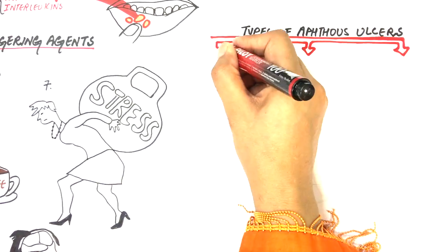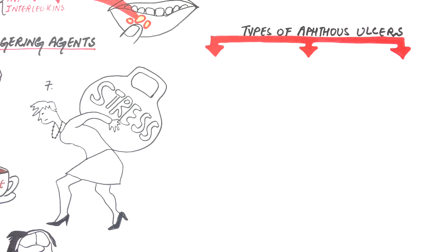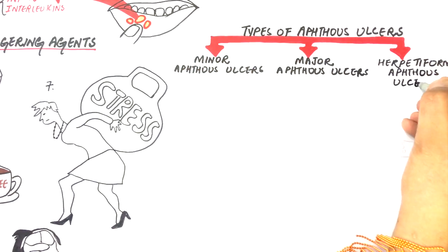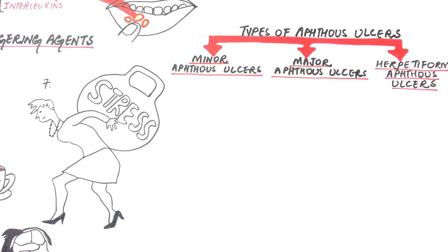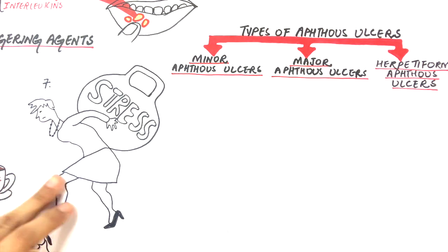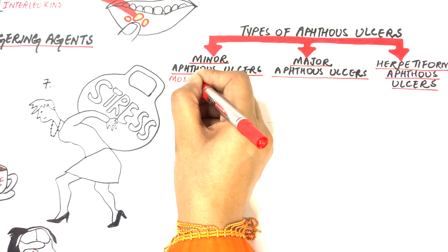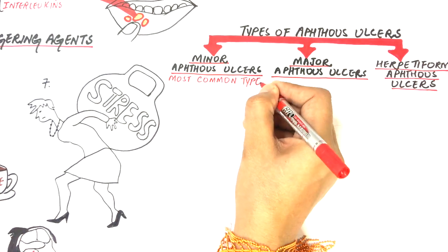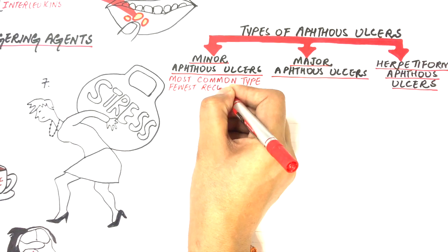The three main types of aphthous ulcers are the usual minor and the unusual major and herpetiform variants. Minor aphthous ulcerations are the most common form and represent more than 80% of those affected. Major aphthous ulcerations represent 10% of those affected and the remaining ulcers are represented by the herpetiform variant. Minor aphthous ulcerations appear with the fewest recurrences and with the shortest duration of time.